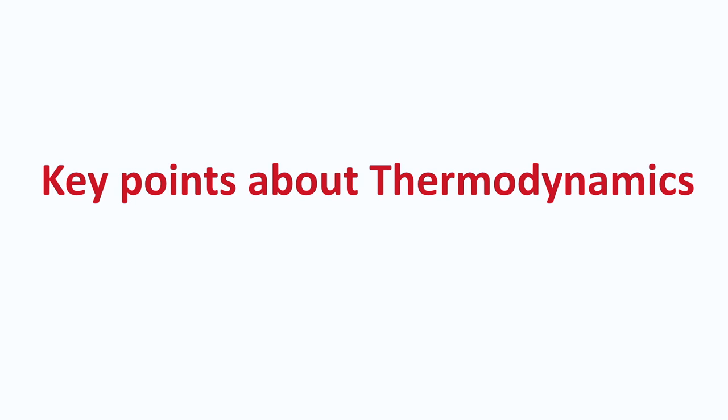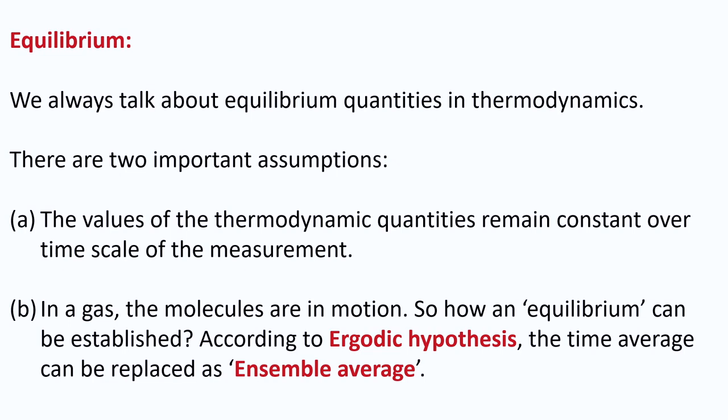Let us look at some key points of thermodynamics, beginning with equilibrium. The first thing that comes to mind is whether we are measuring equilibrium quantities — whether the system is at equilibrium when a physical measurement is made. If the system is evolving with time, making a measurement now and another 10 seconds or 3 days later that gives different outcomes is not a correct measurement of the system's equilibrium properties. The values of thermodynamic quantities — pressure, temperature, volume, chemical composition — must remain constant over the timescale of the measurement.